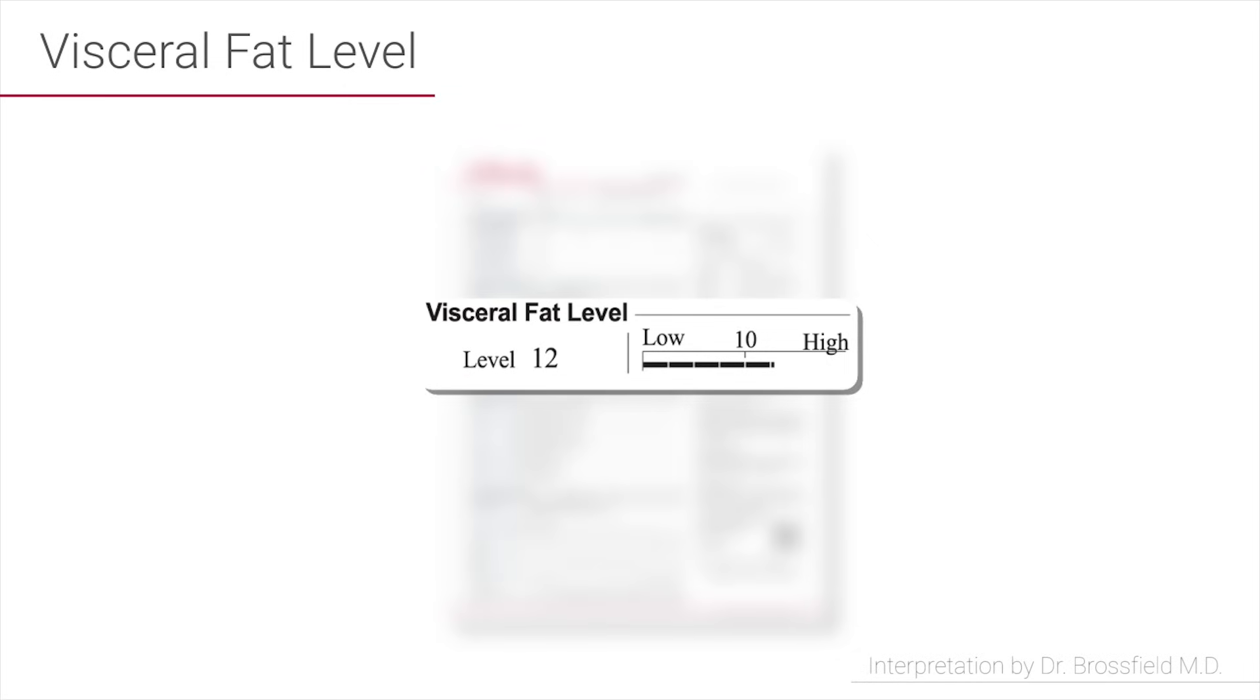The more belly fat you store, the higher your risk of disease. We know that the number 10 on this visceral fat score is kind of a critical breaking point—that if your visceral fat score is below 10, your risk of heart disease and diabetes is actually about 50 percent lower than if this number rises above 10.